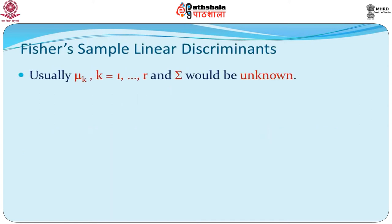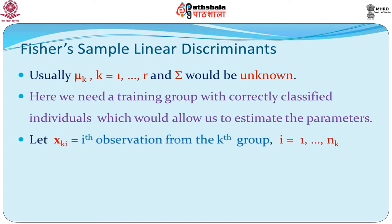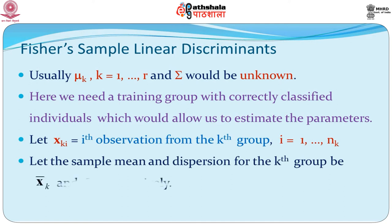What is Fisher's sample linear discriminant function? Usually the μk's would be unknown and so would Σ. We have unknown means and an unknown dispersion matrix, so we need to estimate them. We have a training group which correctly classifies individuals, which allows us to estimate the parameters. We have n1 and n2 known to come from groups g1 and g2 respectively — these are well-defined groups. We call it a training group and say that xki is the ith observation from the kth group. We have nk observations from the kth group and there are r such groups. We define the sample mean and dispersion for the kth group as x-bar_k and Sk — these are sample versions of the μk's and Σ.